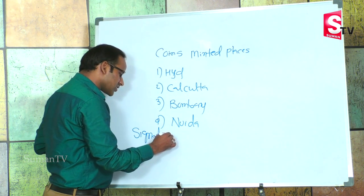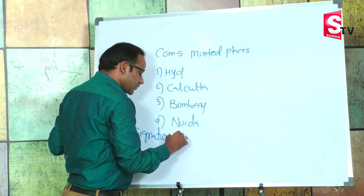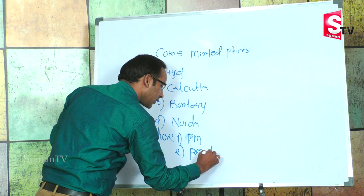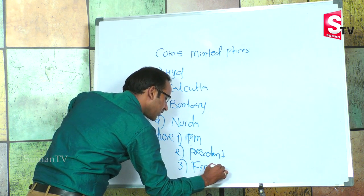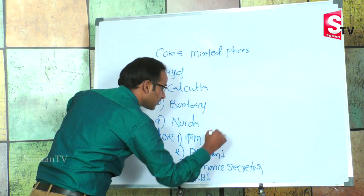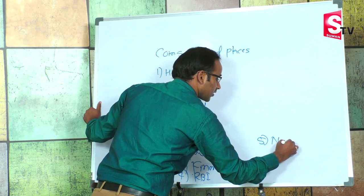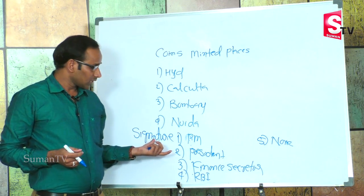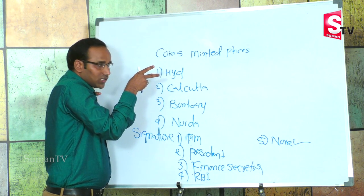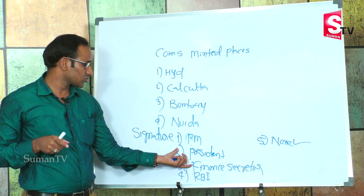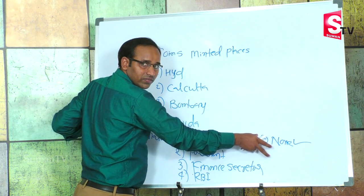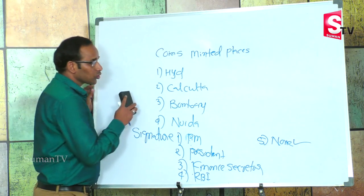Here is a question: which person's signature is present on coins? Options are: Prime Minister, President of India, Finance Secretary, RBI Governor, or None of these. The correct answer is None of these — there is no signature on coins. Only currency notes carry signatures: 1 rupee has the Finance Secretary's signature, and 2 rupees to 10,000 rupees has the RBI Governor's signature.